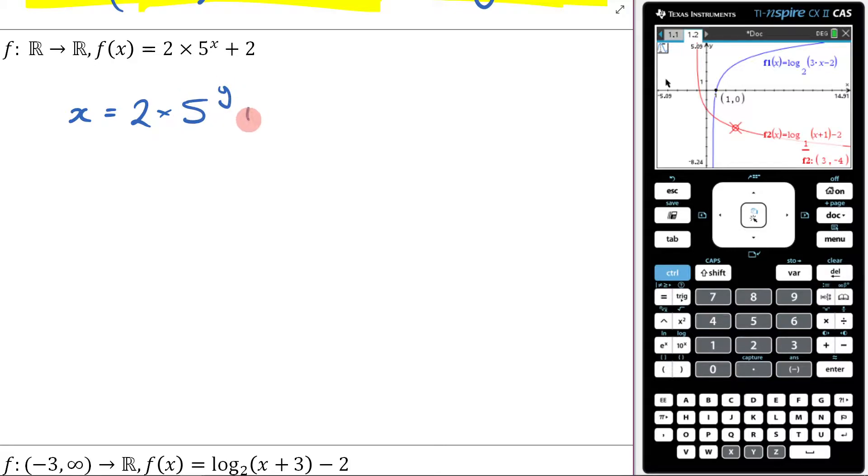x minus 2 over 2 is equal to 5 to the y. Then once you've got it like this, we can go, alright, log of base 5 of x minus 2 over 2 is equal to y.